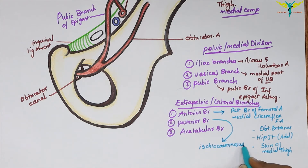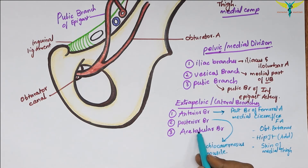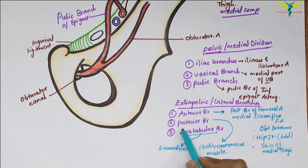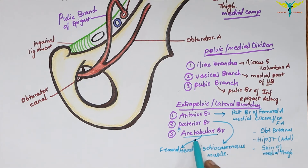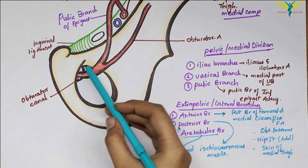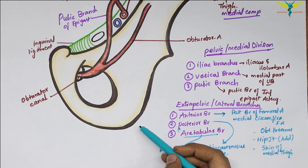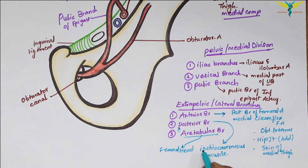The posterior branch supplies the muscles attached to the ischial tuberosity, specifically the ischiocavernosus muscle. The acetabular branch passes transversely to the ligament of the head of the femur and supplies the femoral head. This branch usually arises from the posterior branch and enters the acetabulum through a gap between the acetabular notch and the transverse acetabular ligament, also supplying the acetabular fat and giving a slender branch to the femoral head.